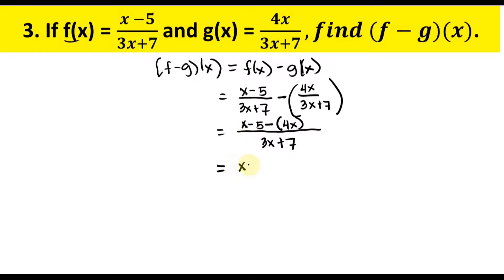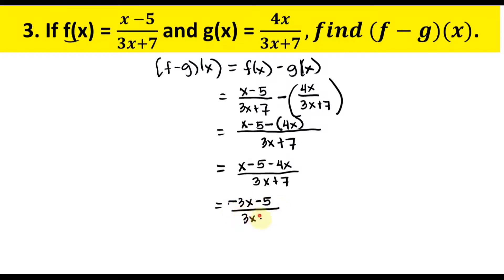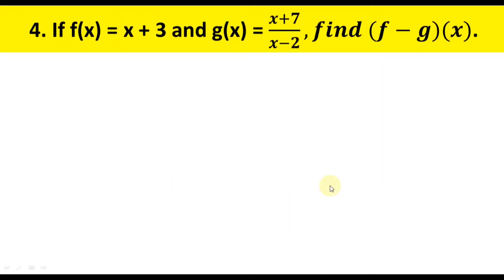With the common denominator 3x plus 7, combine the numerators: x minus 5 minus 4x. Combine like terms: x minus 4x gives negative 3x. The final answer is negative 3x minus 5 over 3x plus 7.